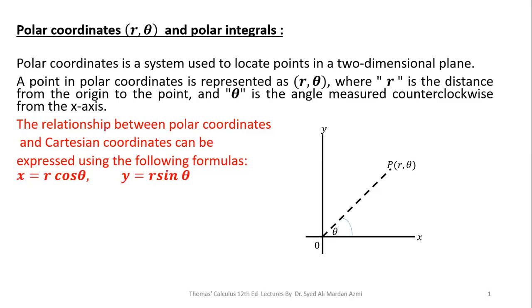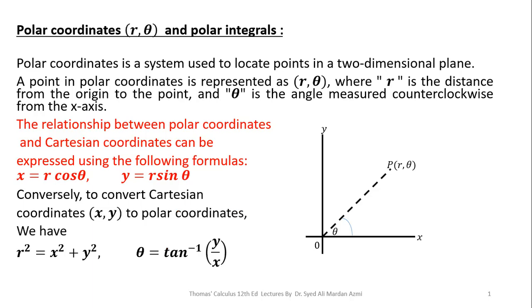Next, these are the transformation equations in order to convert Cartesian coordinates into polar coordinates, and for the reverse process, we have R squared is equal to x squared plus y squared, and theta is equal to tan inverse of y over x. Please remember these equations.